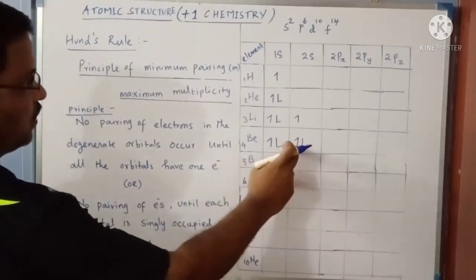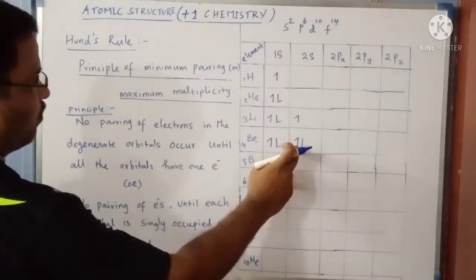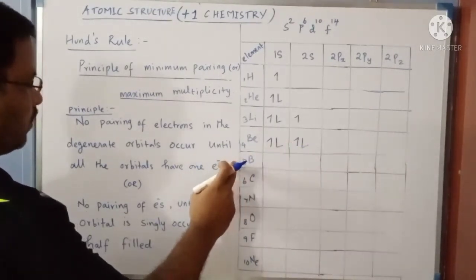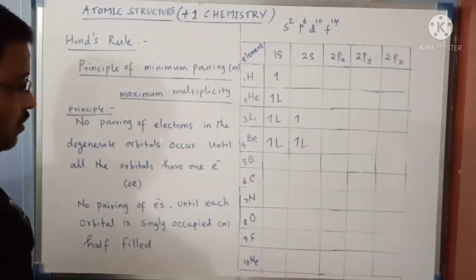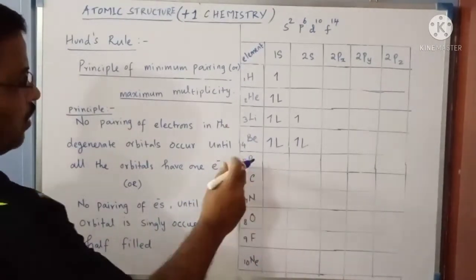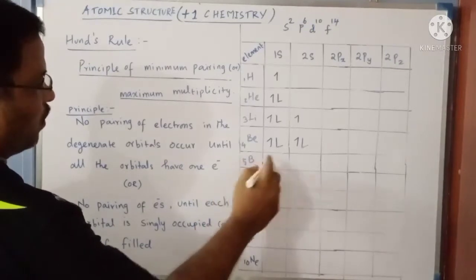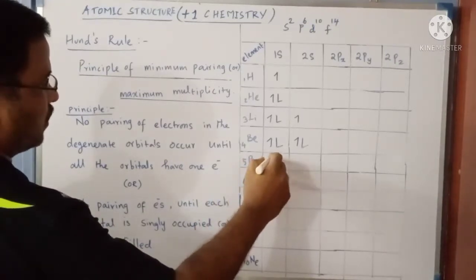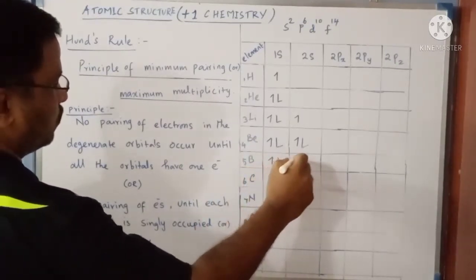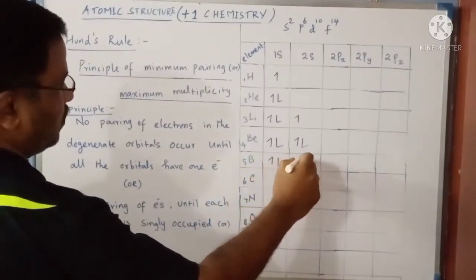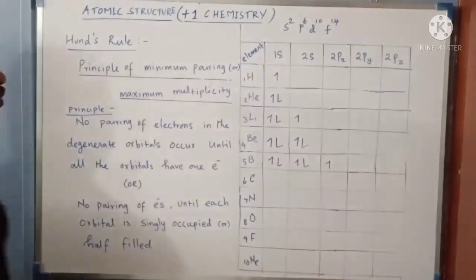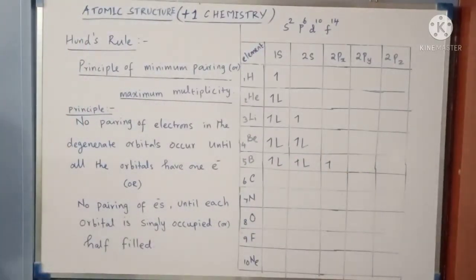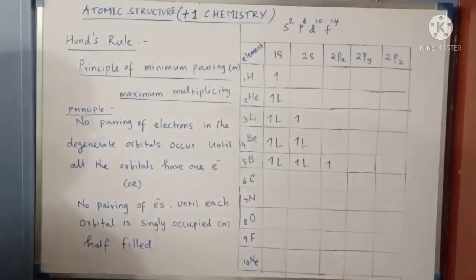For boron, the 2s orbital is also completely filled. In the next element, boron with atomic number 5, the fifth electron will go to the next orbital. Electrons are filled: 1, 2, 3, 4 in 1s and 2s, and now the fifth electron goes to the 2Px orbital.